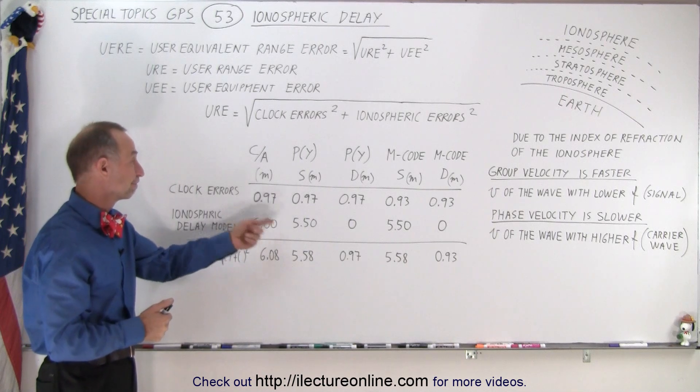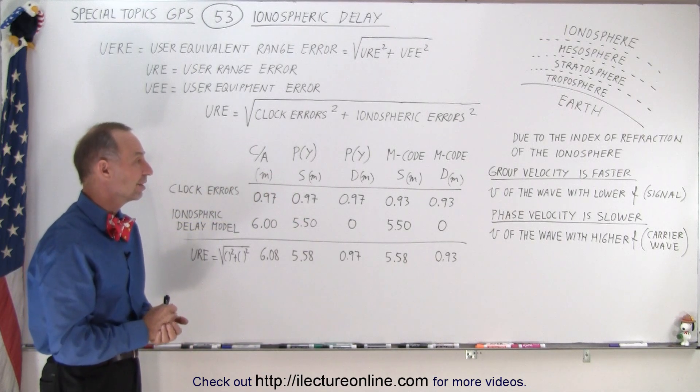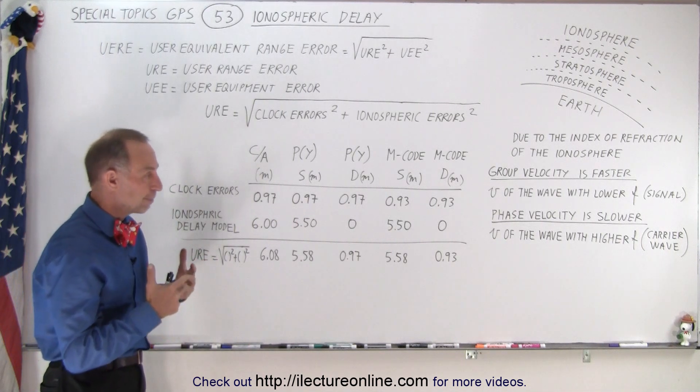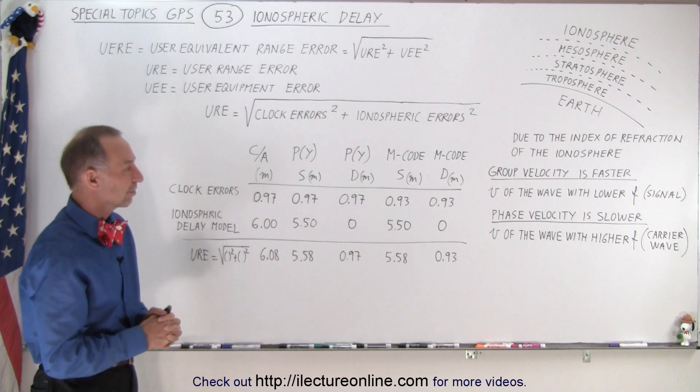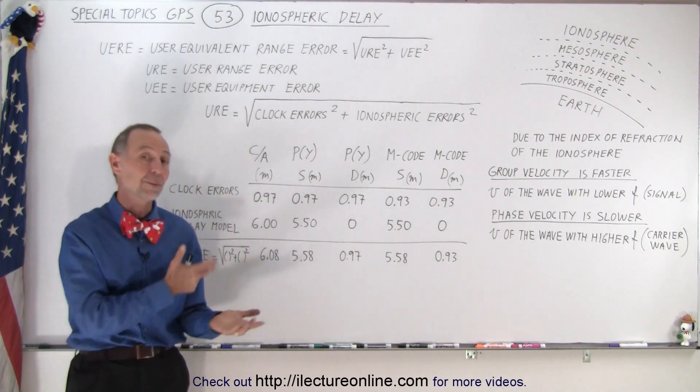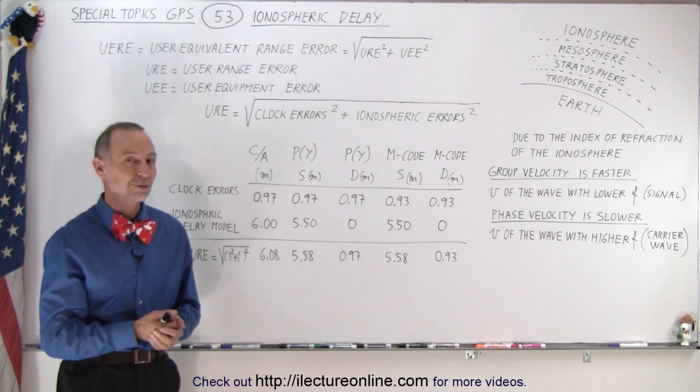And so that's why we need to take into account the atmospheric delay, because it could produce quite a bit of error in meters, five, six meters in error, and so that has to be accounted for in order to get a better GPS signal. So that is what we mean by the ionospheric delay and how it plays a part in the accuracy of your GPS signal.